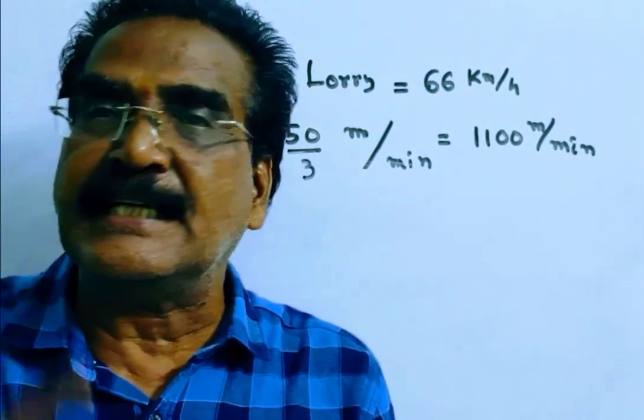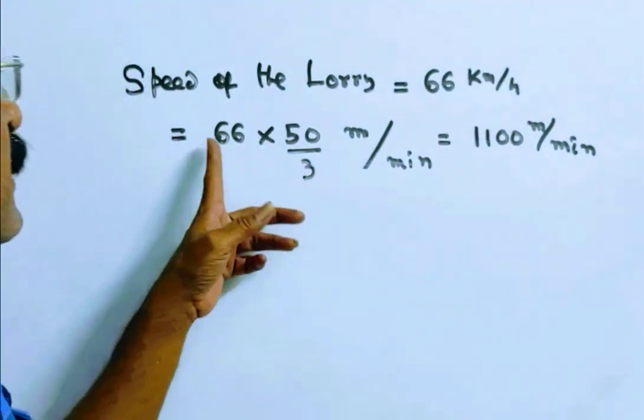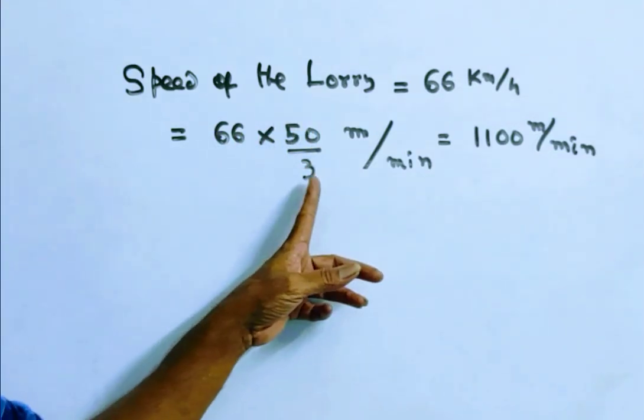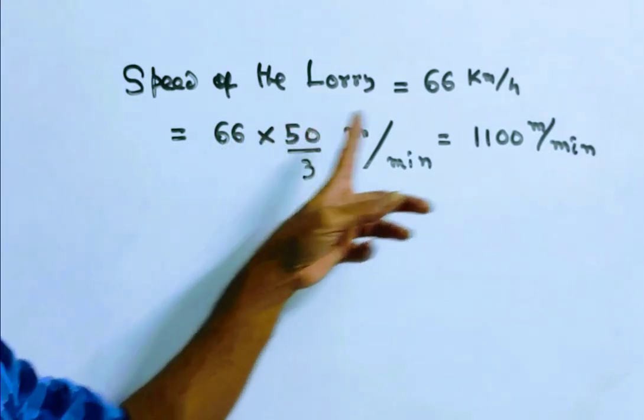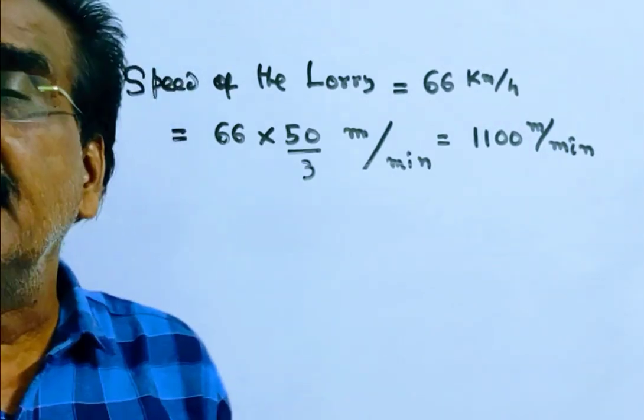So 66 into 50 by 3, 22 into 50, equals 1100 meters per minute.